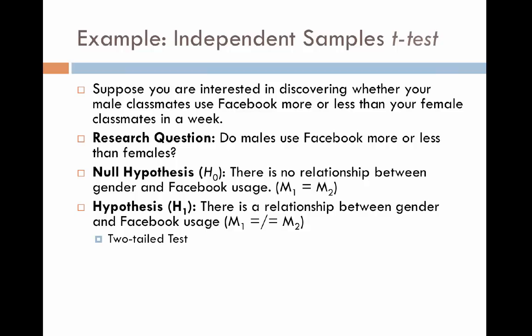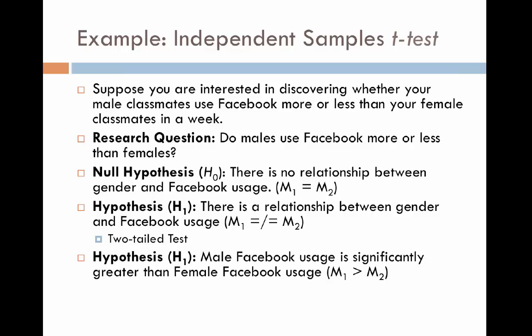We would use a two-tailed independent samples t-test in that case. If we had a theoretical or logical reason to believe that male classmates use Facebook more than female classmates, we might phrase our hypothesis as: male Facebook usage is significantly greater than female Facebook usage, or population one is greater than population two. In that case, we would use a one-tailed independent samples t-test. For this scenario, I think we'd use the two-tailed test, since there's no theoretical reason to assume one gender uses it more than the other.